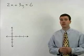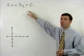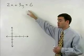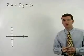To graph the line that has the equation 2x plus 3y equals 6, we would first convert the equation to slope intercept form.